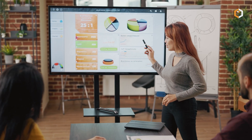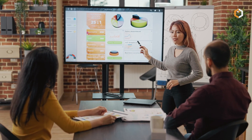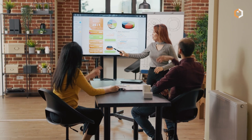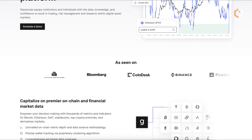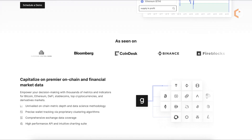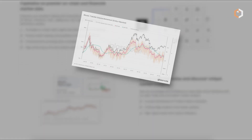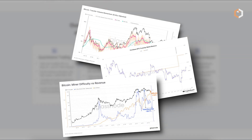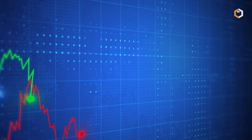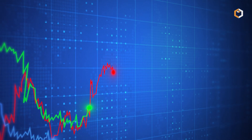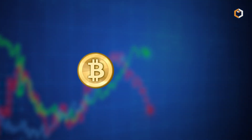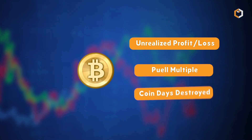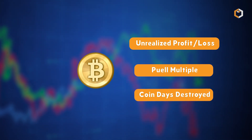The company was founded in 2017 to promote the transparency and accessibility of blockchain data. Their offering includes hundreds of metrics including transaction data, wallet holdings, miner data, and derivative volumes. It also tracks on-chain market indicators such as SOPR, unrealized profit or loss, NVT multiple, coin days destroyed, and more.